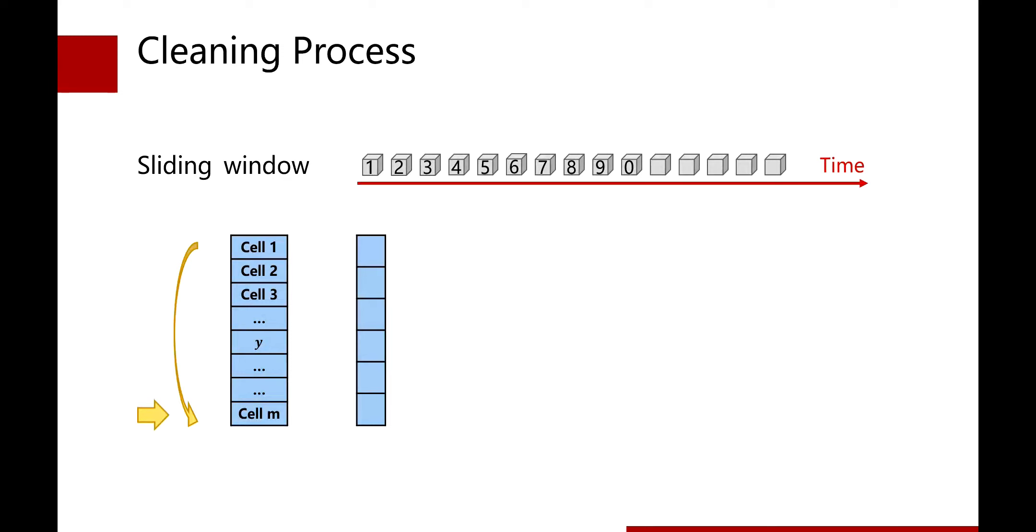Every time a new item arrives, the cleaning process will move to the next cell. First, the process cleans the first cell and the first item is inserted. Then, the process cleans the second cell and the second item is inserted.